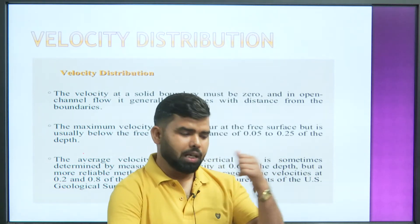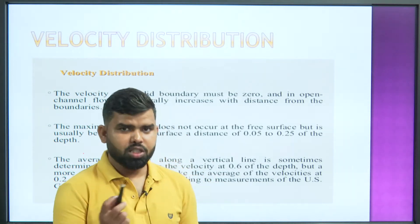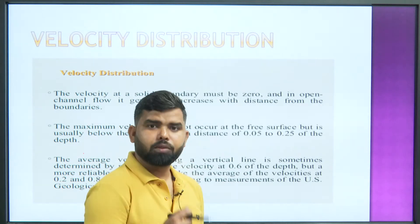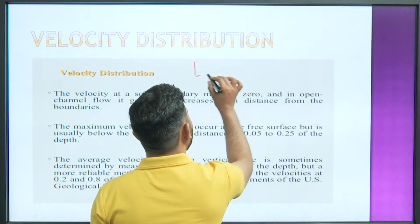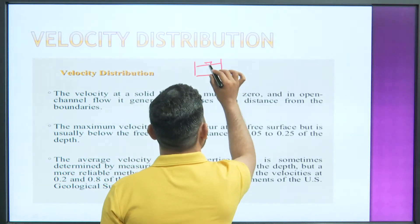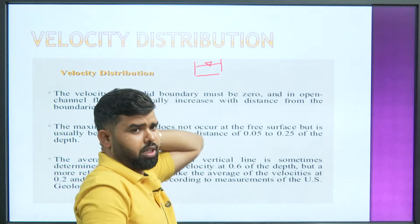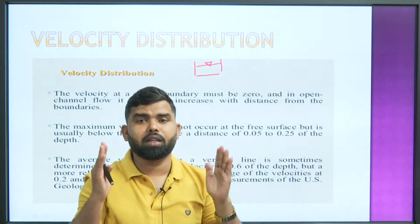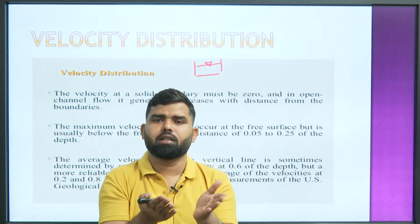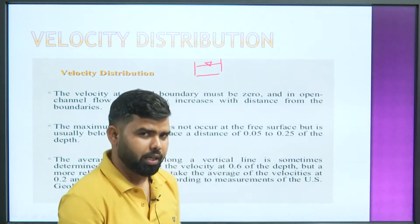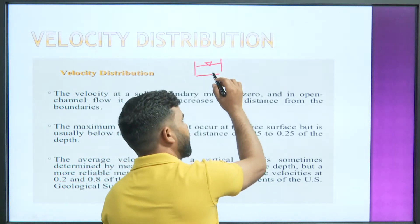First, we want to explain some things here — the parameters you need to keep in mind regarding velocity distribution. Why did we select velocity distribution? Actually, I have already covered types of channels. For example, if the cross-section is rectangular, how will velocity vary in it? Water is flowing — imagine a river anywhere where water is flowing. Consider a river; in the river's channel section, water is flowing.